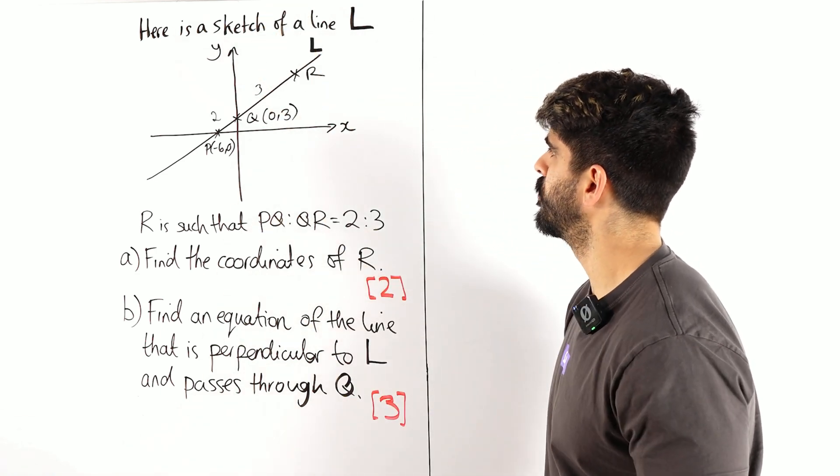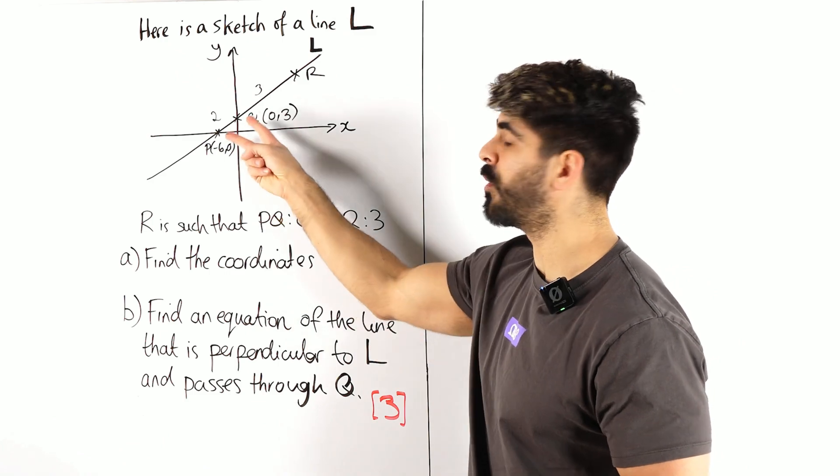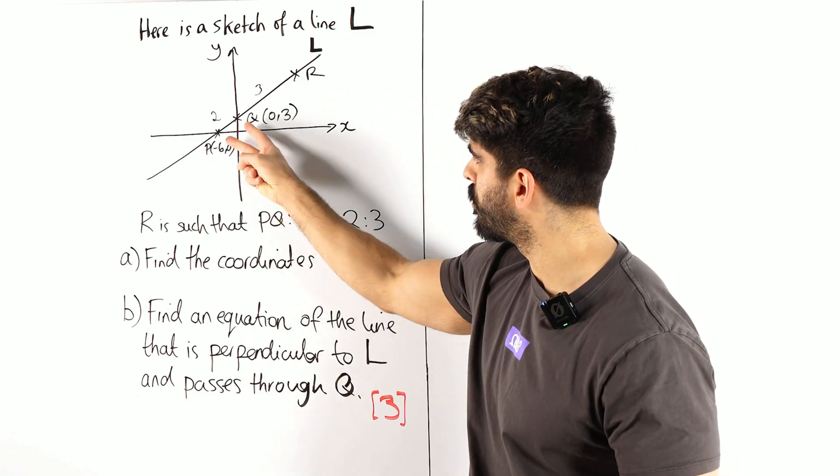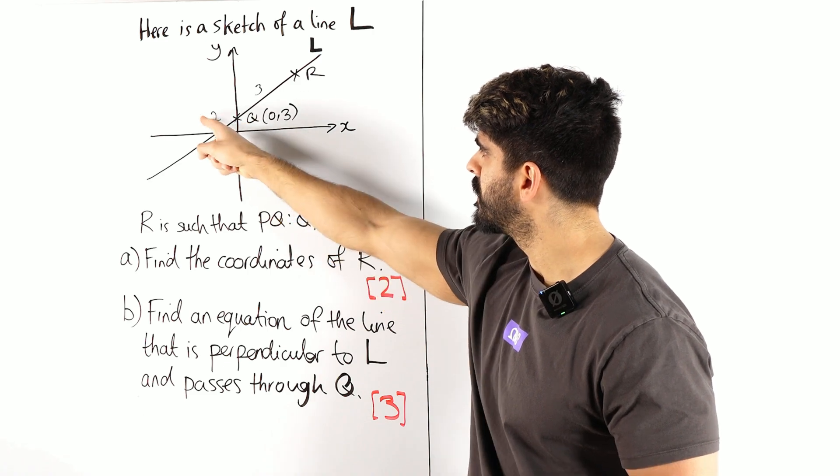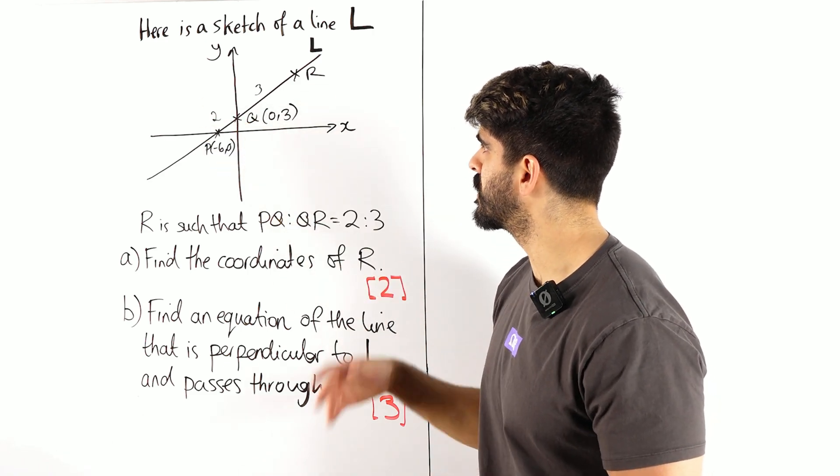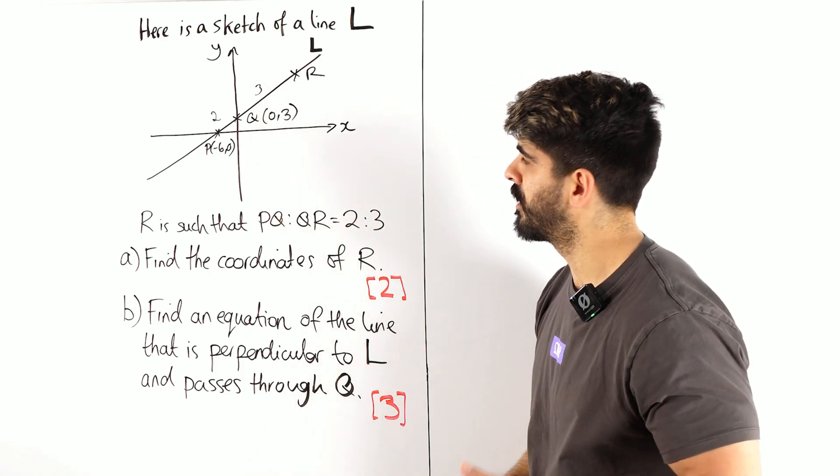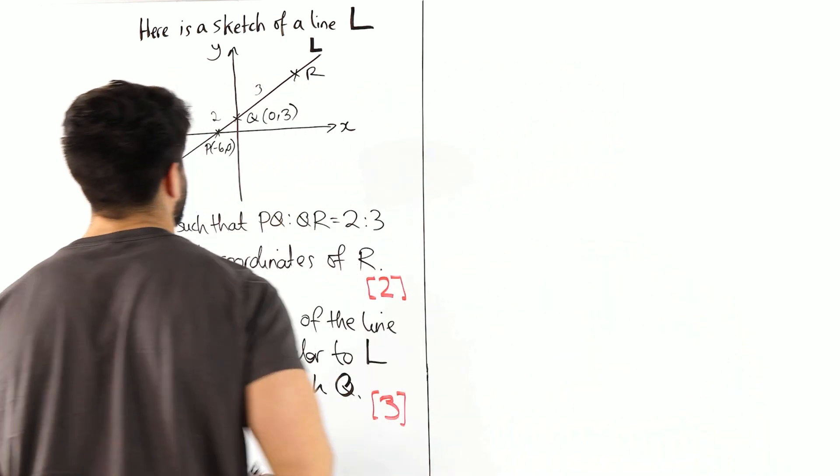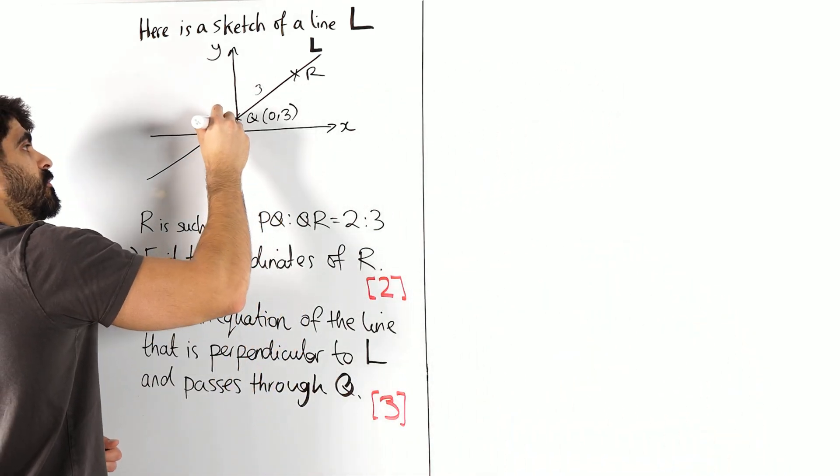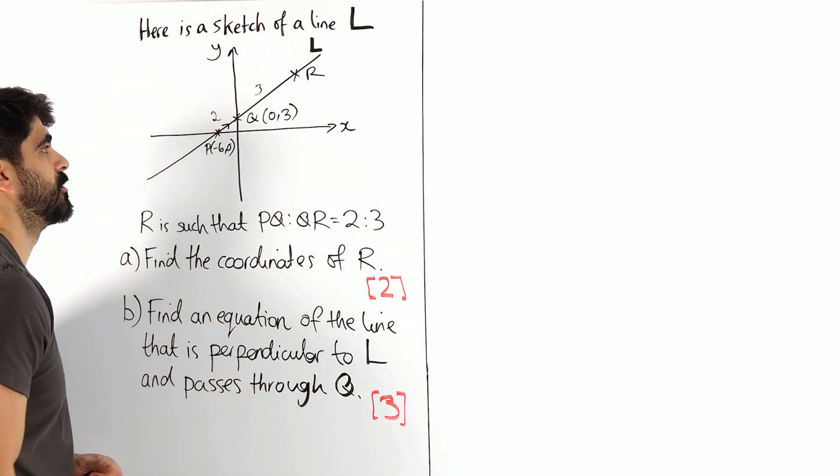Okay, so we somehow need to work out, we know what P and Q are. We need to use those coordinates and knowing that that's worth two parts, we'll use that to help us work out where R is. So the first thing we probably want to do then is work out how do we go from P to Q.